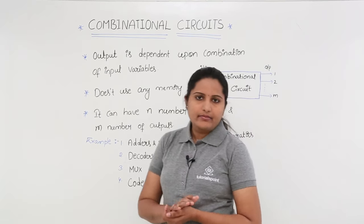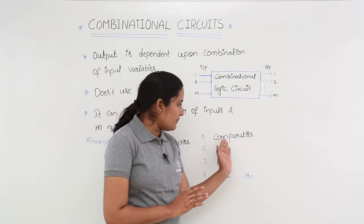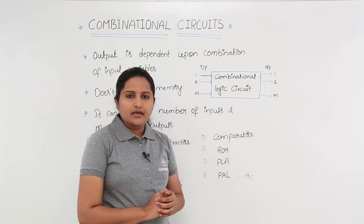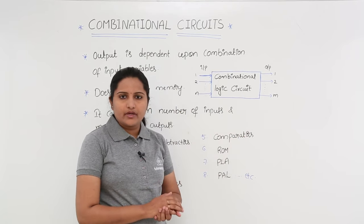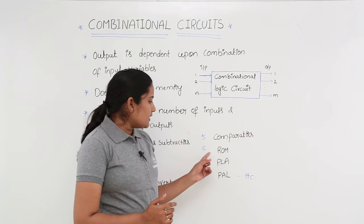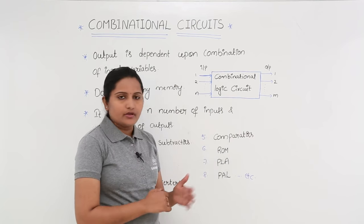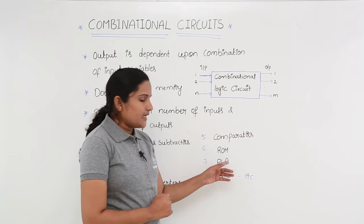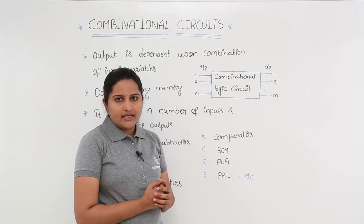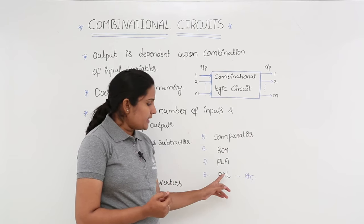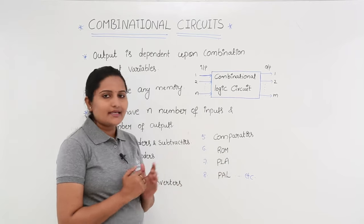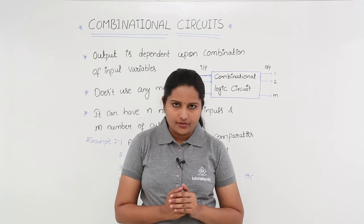Another best example is comparators, which can compare two or more input combinations and provide output. ROM (read only memory) and PLA (programmable logic array) are also examples of combinational circuits.